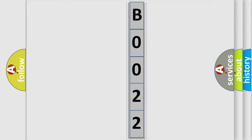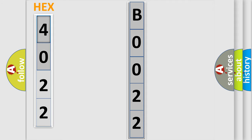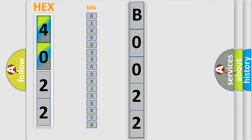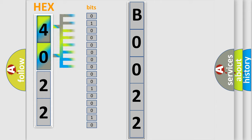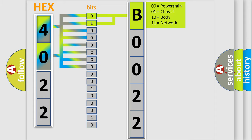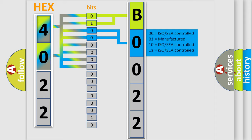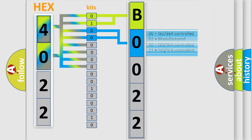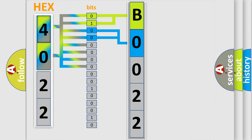The error code is split into two bytes consisting of 16 bits. One bit is the basic unit that each computer works with. The bit has two logical states: zero, low level, and one, high level. By combining the first two bits, the basic character of the error code is expressed. The next two bits determine the second character. The last bits of the first byte define the third character of the code.